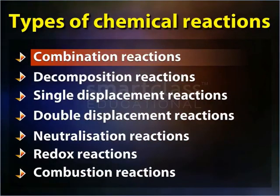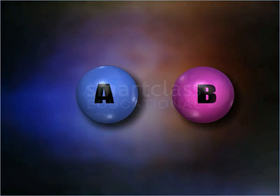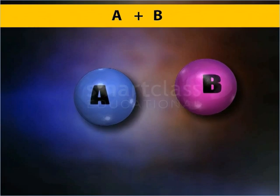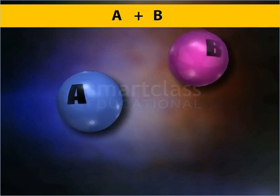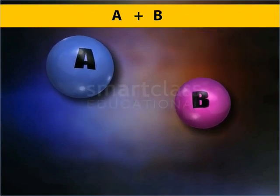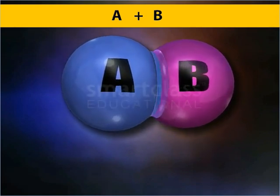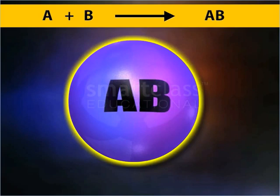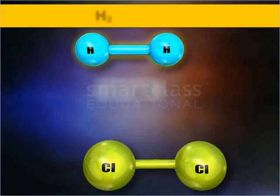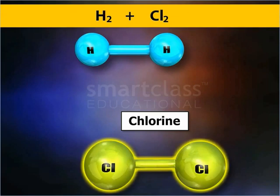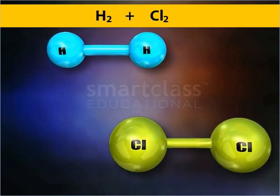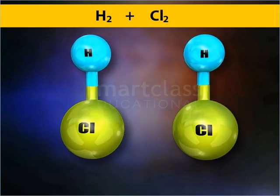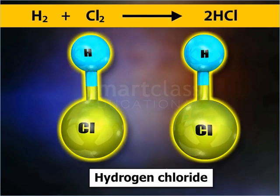Combination reactions are chemical reactions in which two or more chemical substances combine to form a product. For example, hydrogen and chlorine combine to form hydrogen chloride.